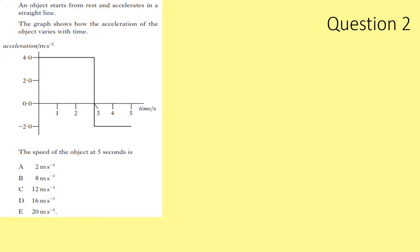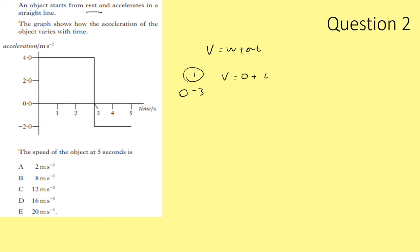Question 2. An object starts from rest and accelerates in a straight line. The graph shows how the acceleration varies with time. We need the velocity at 5 seconds. Using V = U + AT for the first part of motion from 0 to 3 seconds: V = 0 + 4×3 = 12 metres per second.